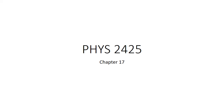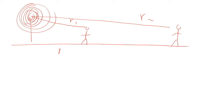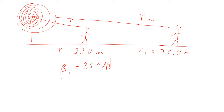Let's do another example. We've got a loudspeaker producing sound and two people. One person is a distance R1 away from the speaker and another is a distance R2 away. R1 is 22 meters, R2 is 78 meters, and the sound level at the first person is 85 decibels. We want to find the sound level at the second person.